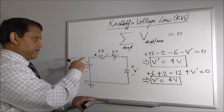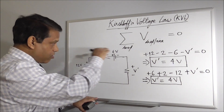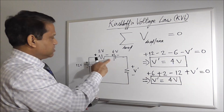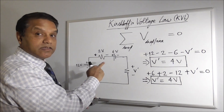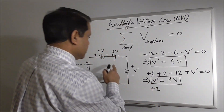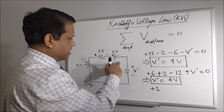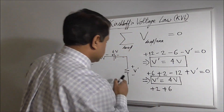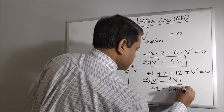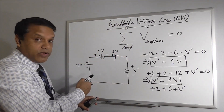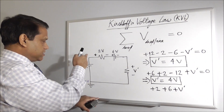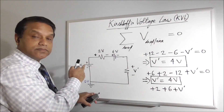Let's now begin here and go clockwise, but we will write rises as negative and drops as positive this time. So this is a drop — we write it as positive: plus 2. This is again a drop — we write positive: plus 6. This is again a drop — write positive. Now we have come to the ground node, but we haven't completed the loop because we started here. So we have to go across this element — this time it is minus to plus, which is a rise.